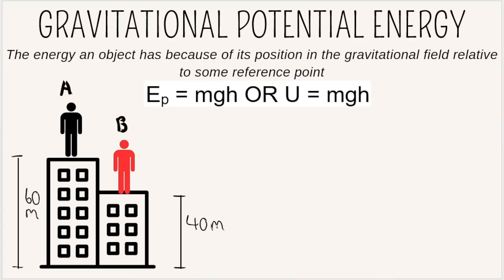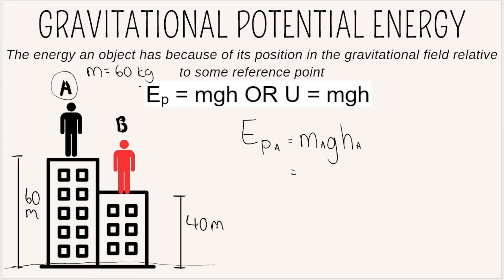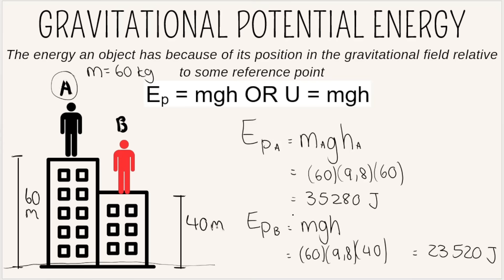For example, imagine two people with identical masses of 60 kg on Earth. Person A is 60 meters above the ground and Person B is 40 meters above. Person A will have a higher potential energy. To confirm: EP for Person A = 60 × 9.8 × 60, and EP for Person B = 60 × 9.8 × 40. From the calculations we can clearly see that the potential energy for A is greater than that of B.